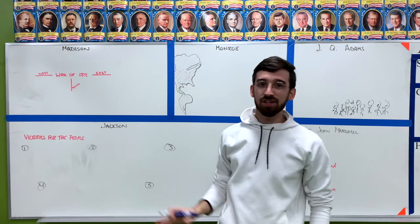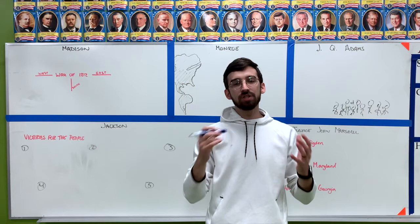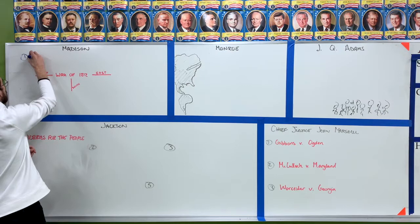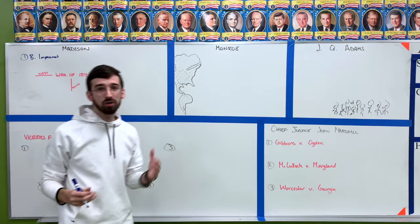Let's get started with President James Madison, elected after Thomas Jefferson. When James Madison becomes president, we've got a lot of tension between the United States and Britain that's going to lead us to the War of 1812. Item number one is British impressment — the British are impressing our sailors and they won't stop.